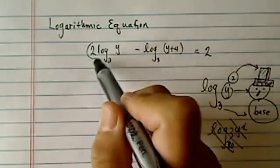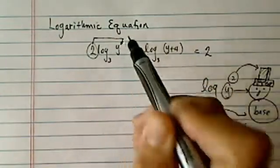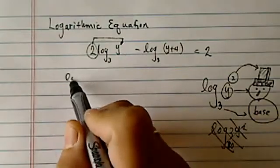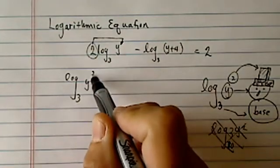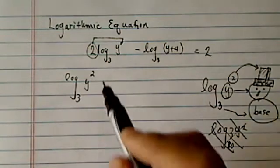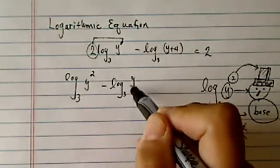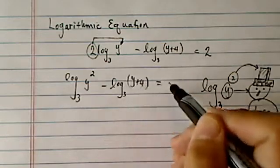In order to solve this one, let's put this hat back on. We're going to use the property of a log. So, a log, if there's a number in front, you can put it on top, in the hat position. Minus log base of 3, y plus 4, equal to 2.